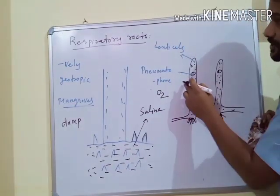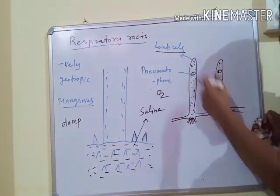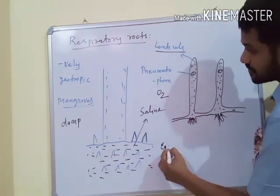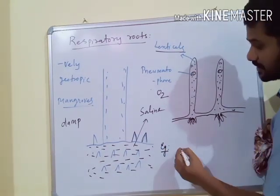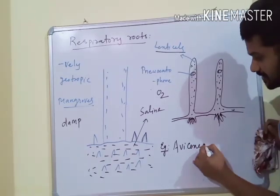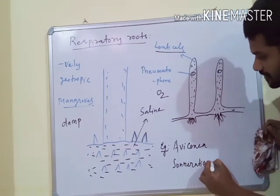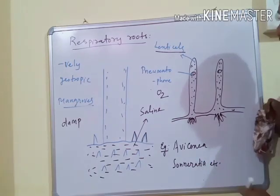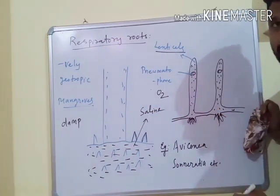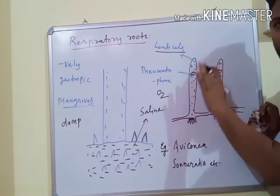Besides pneumatophores, Respiratory Roots also contain lentils, which also help in exchange of gases. Examples of Respiratory Roots are Avicennia and Sonneratia. These are some examples for Respiratory Roots, and all of these belong to mangroves. These are some important root modifications of the Tap Root system.